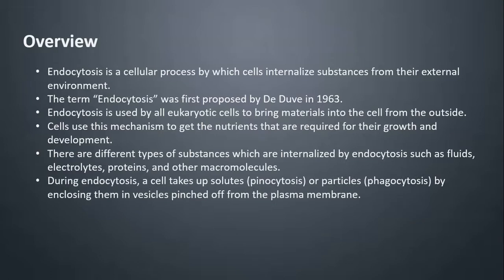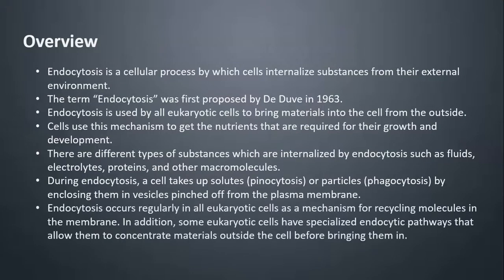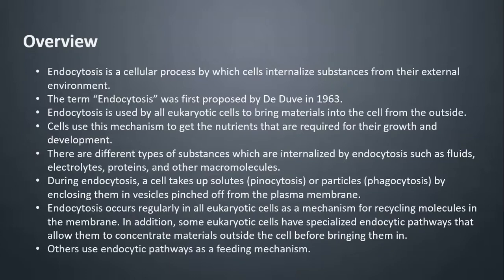During endocytosis, a cell takes up solutes by pinocytosis, or particles by phagocytosis, by enclosing them in vesicles pinched off from the plasma membrane. Endocytosis occurs regularly in all eukaryotic cells as a mechanism for recycling molecules in the membrane. In addition, some eukaryotic cells have specialized endocytic pathways that allow them to concentrate materials outside the cell before bringing them in. Others use endocytic pathways as a feeding mechanism.